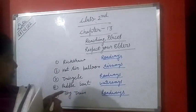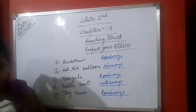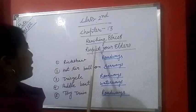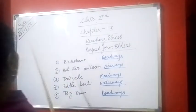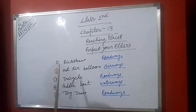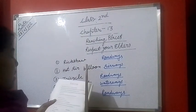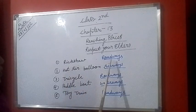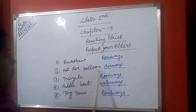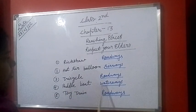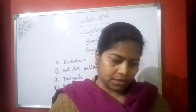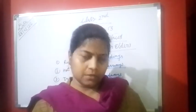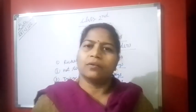Yes students. Firstly you have to write the date, then exercise number 1, and then number 2: Name the following means of transport. Rickshaw — roadways, hot air balloon — airways, tricycle — roadways, paddle boat — waterways, toy train — roadways. Exercise will be completed. Ok students, bye.